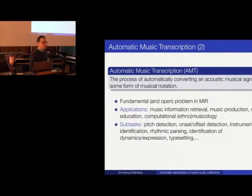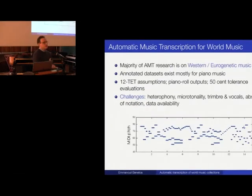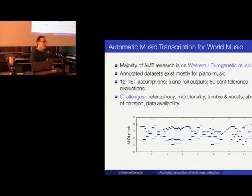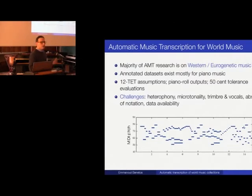What about using these methods for world music collections? The problem that we and many MIR methods have been facing is the so-called Western bias. Many of these methods are developed using predominantly Western data, and we also make assumptions when developing our computational or mathematical models — for example, assuming 12-tone equal temperament or the presence of specific timbres such as orchestral Western instruments.